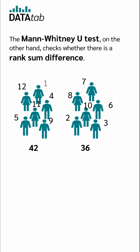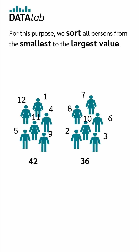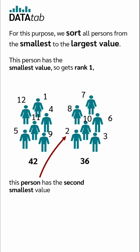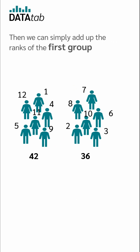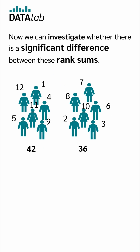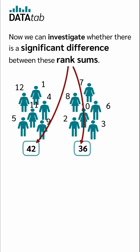The Mann-Whitney U test checks whether there is a rank sum difference. For this purpose, we sort all persons from the smallest to the largest value. This person has the smallest value and gets rank 1; this person has the second smallest value, and so on and so forth. Then we simply add up the ranks of the first group and the second group, and investigate whether there is a significant difference between these rank sums.